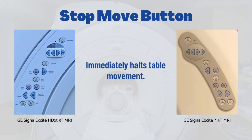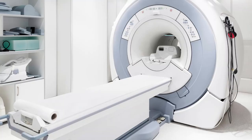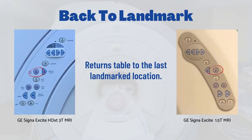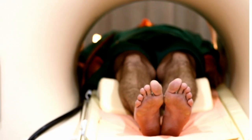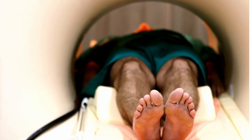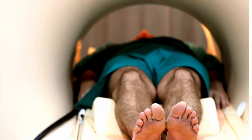Stop move immediately halts all in and out cradle functions. This button overrides all MRI scan movement functions including move to scan. The back to landmark button moves the patient back to the last landmark position. This button is disabled during MRI scans and emergency stop situations.